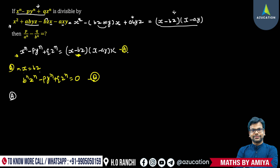Now in expression A, our first expression, put X equal to ay. So if we put X equal to ay, we will get aⁿyⁿ minus pYⁿ plus qZⁿ is equal to 0. Say this one is Expression C.